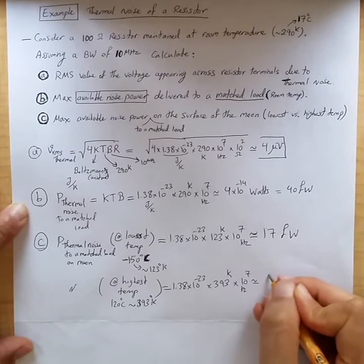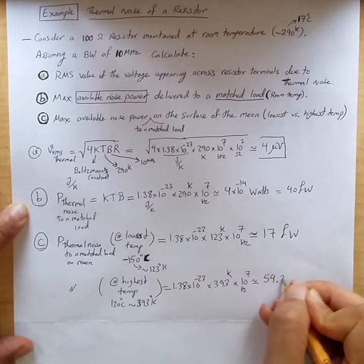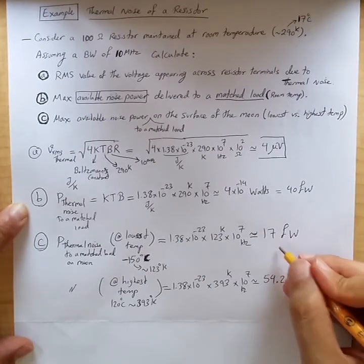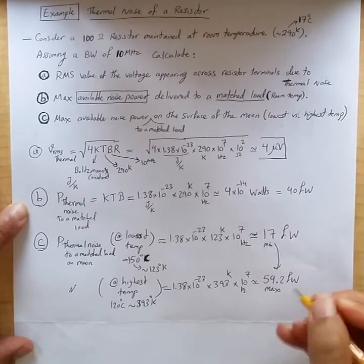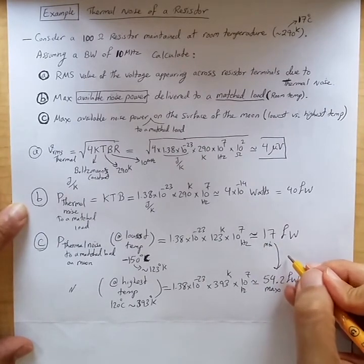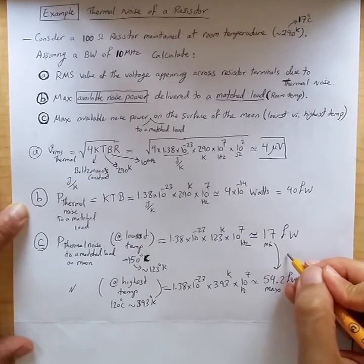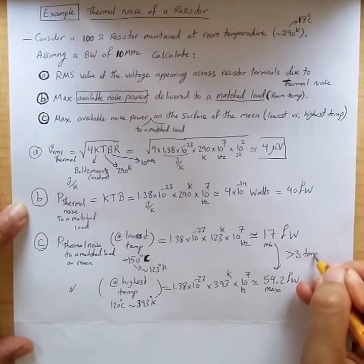Which is approximately 54.2 femtowatts. And we can see that from minimum to maximum available noise power on the surface of the moon, there is a factor larger than 2 times.